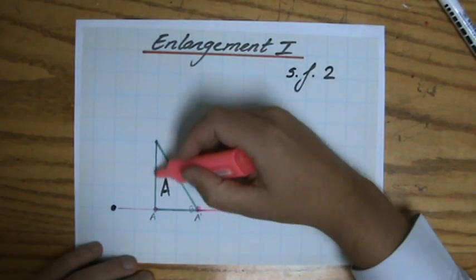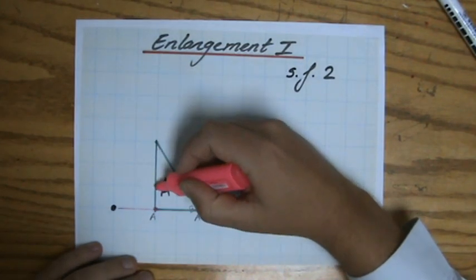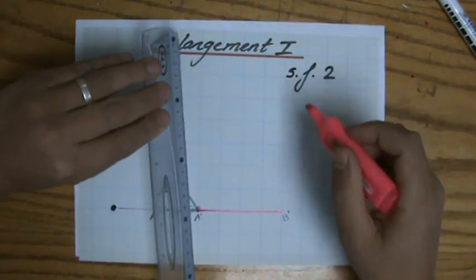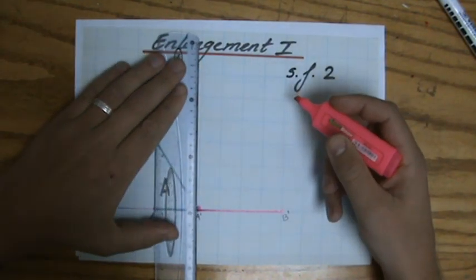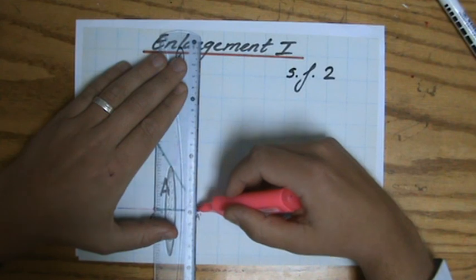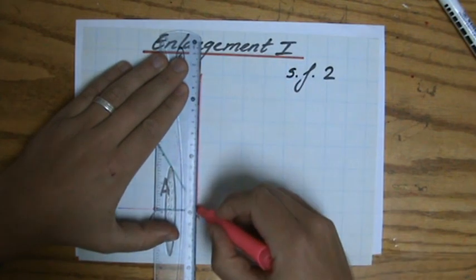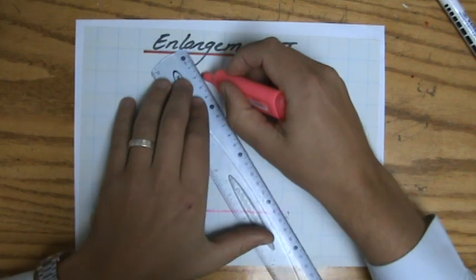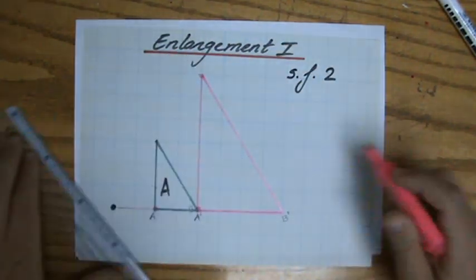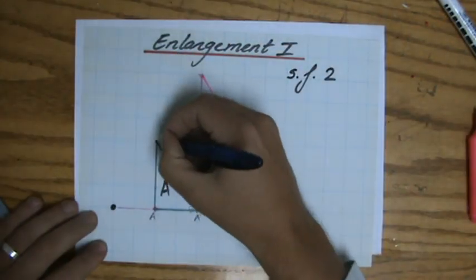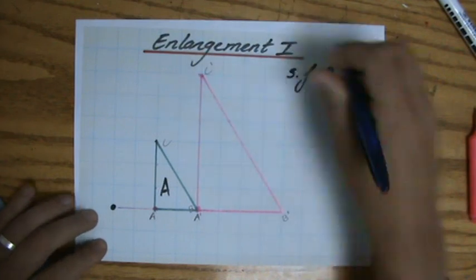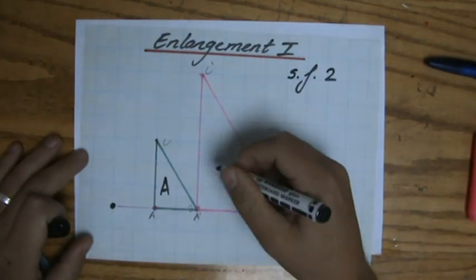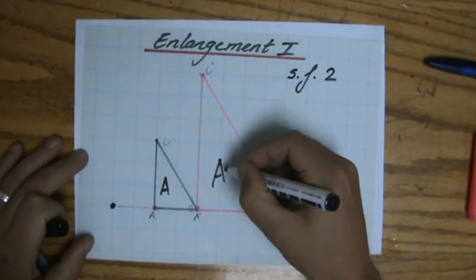And what about this length now? It used to be 1, 2, 3 long, so with a scale factor of 2, how many blocks is it going to be long? If it was 3, it is going to be 6 long, there we go. And then we can just finish it, can't we? So if that was C, that's going to be C apostrophe. And the entire triangle is going to be triangle A apostrophe.